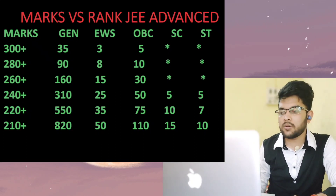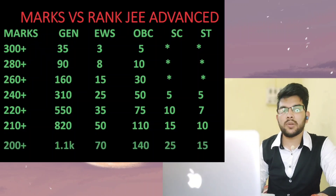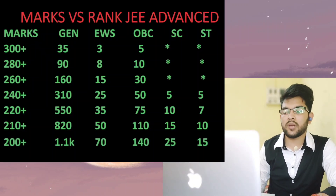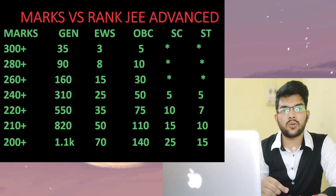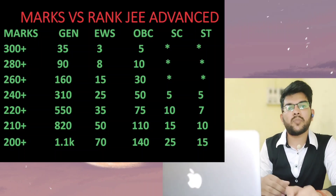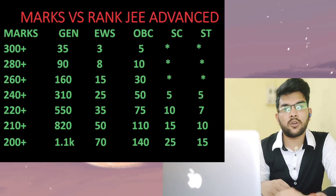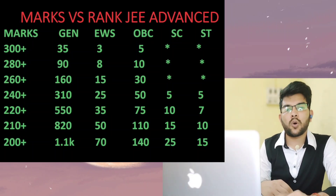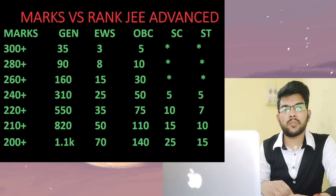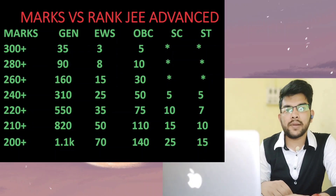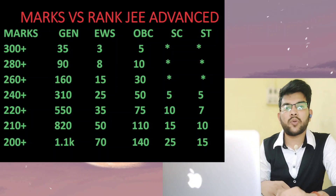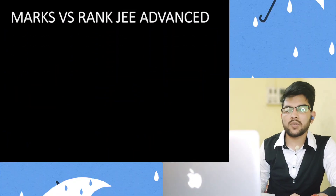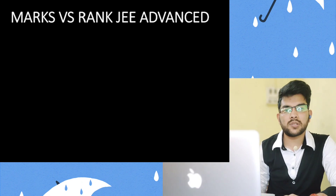For 200+ marks: CRL rank under 1,100, EWS under 70, OBC under 140, SC under 25, ST under 15 — 100% sure. This information is based on the last three to four years of data, and having guided many students in previous years, I am confident in providing category ranks based on particular marks. You can rely on this data to set your goal.